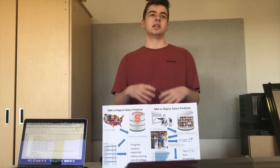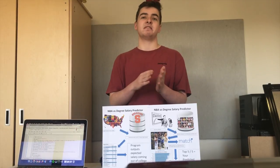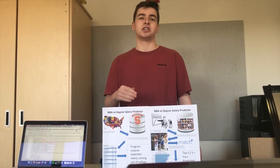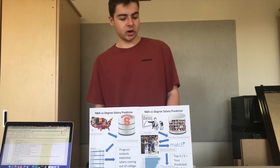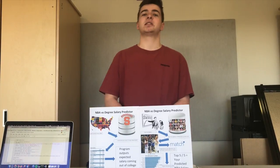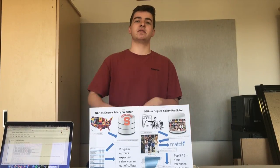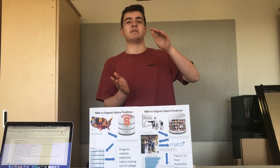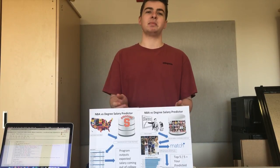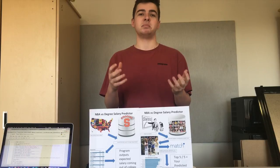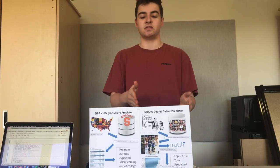Our program then takes those stats that you entered and matches you with the top 5 players that match your stats most closely. Once our program has found the top 5 players, it's going to look at a different column in our data frame and find those top 5 players' salaries, then add those salaries up and divide by 5 to get your average expected NBA salary based on the points and stats you've entered.